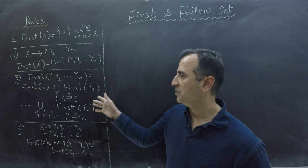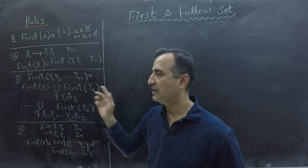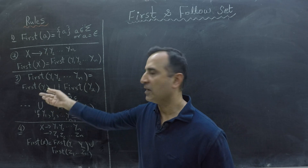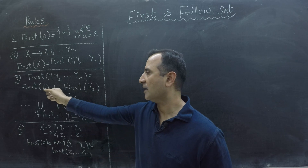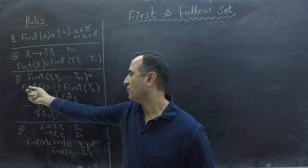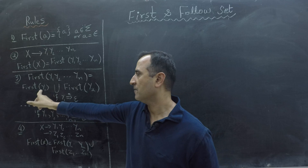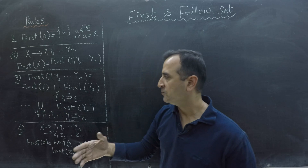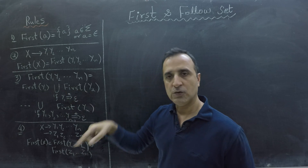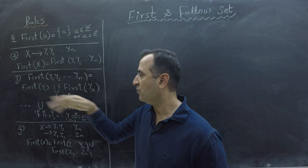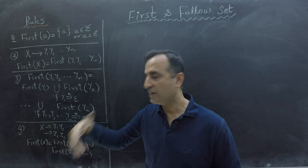Rule number three says that First of a sequence of terminals and non-terminals can be computed by taking unions of First of each of those symbols, but these unions are conditional. We say First of Y1, which is the first symbol, union — only if Y1 derives to epsilon — First of Y2. Then we take union with First of Y3 only if both Y1 and Y2 derive to epsilon, and so on and so forth.